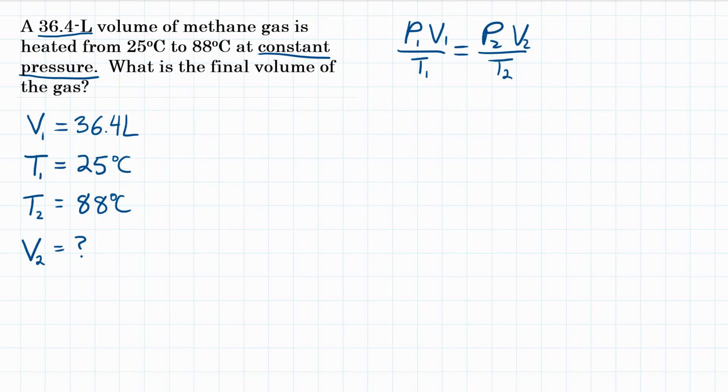So if we look at our combined gas law, we can actually cross out pressure. So P1 and P2 because those are not going to change. They're going to stay the same, which means we can basically ignore it. So now our combined gas law becomes Charles Law, which is V1 over T1 equals V2 over T2.